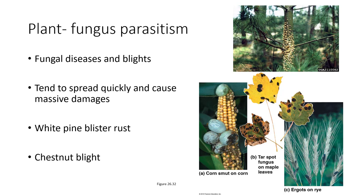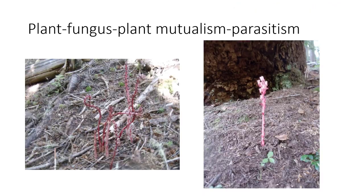Corn smut grows on corn and is actually made into a culinary delicacy you can buy and try. Ergot grows on rye and contains a compound related to LSD, which can cause hallucinations but also kill you slowly, causing a condition called ergotism. Chestnut blight wiped out most chestnut trees in the eastern United States, essentially eliminating the species from those forests. These are all examples of fungi acting as parasites on plants.